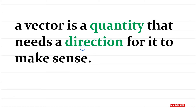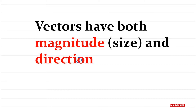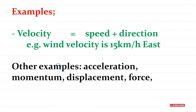A vector is a quantity that needs a direction for it to make sense. So on top of having a quantity, we also need to have a direction. Vectors have both magnitude — that is size — and direction. For example, velocity has speed and direction: you could say velocity is 15 kilometres per hour east, so we have magnitude and direction.